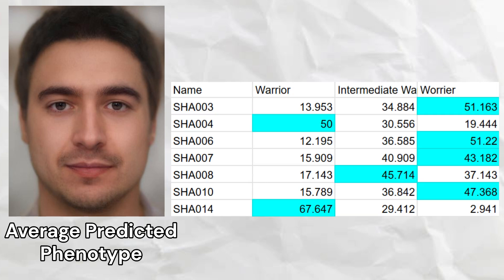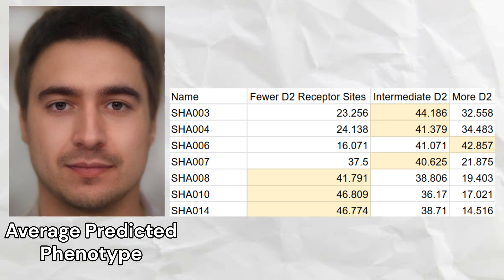Two of the samples were predicted to be non-warriors, while four samples were warriors. As a group, the Shah Tepe samples had a predisposition to higher dopamine levels and worse stress tolerance. Three of the samples were predisposed to fewer D2 receptor sites, while one was predisposed to more D2 receptor sites. As a whole, the Shah Tepe samples were predisposed to no-go learning and lower odds of schizophrenia and bipolar disorder.